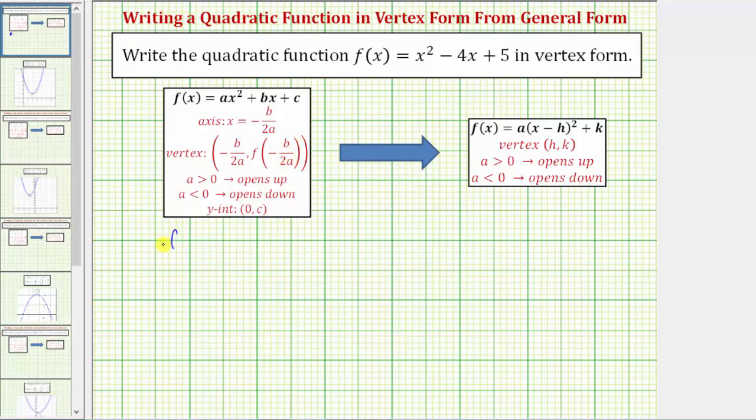So beginning with the given function, let's identify the values of a, b, and c. Notice a is equal to one, b is equal to negative four, and c equals positive five.